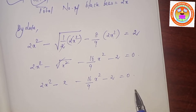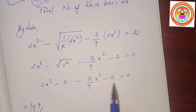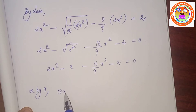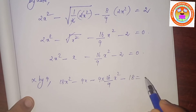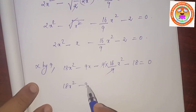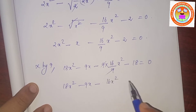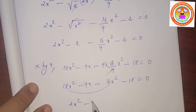Combining like terms: 18x squared minus 16x squared equals 2x squared. So the quadratic equation is 2x squared minus 9x minus 18 equals 0. To solve it: 2 times minus 18 equals minus 36. Product is minus 36 and sum is minus 9.